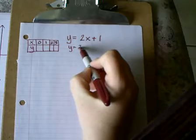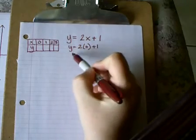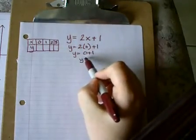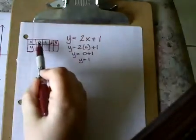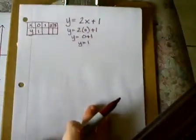So y equals 2. Instead of x, I'll use 0 from my chart. So y equals 2 times 0 is 0, plus 1. So y equals 1. Since I used 0, then the answer for y goes right below. Go ahead and do the next one. Repeat the process.